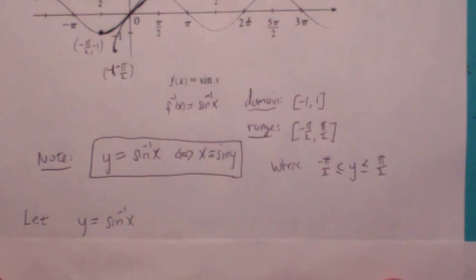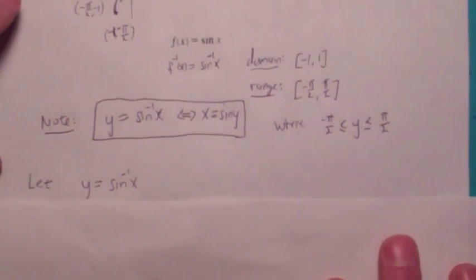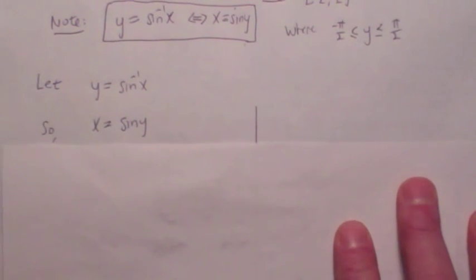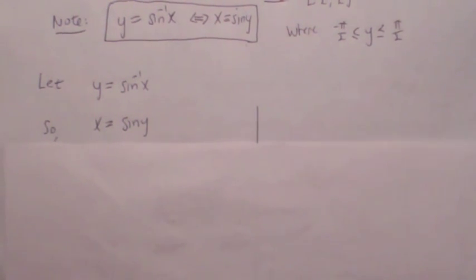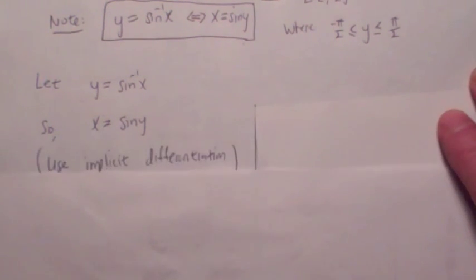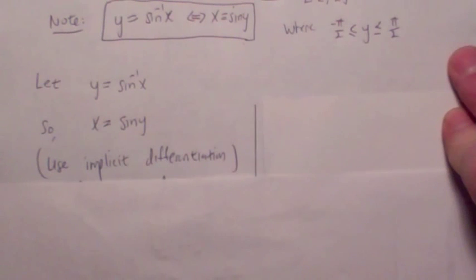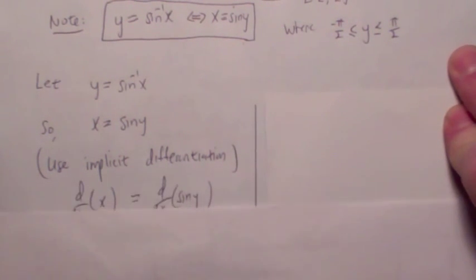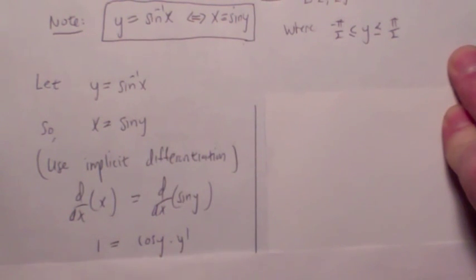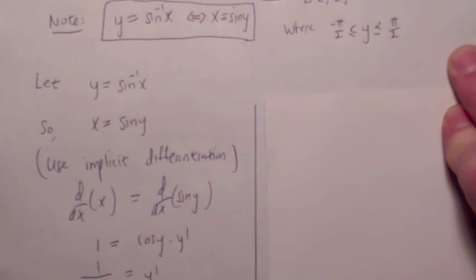Here's how we derive the differentiation formula. Let y = arcsin(x), which we rewrite as x = sin(y). Using implicit differentiation, differentiate both sides with respect to x: the left side gives 1, and the right side gives cosine y times y-prime. So y-prime = 1 / cos(y).